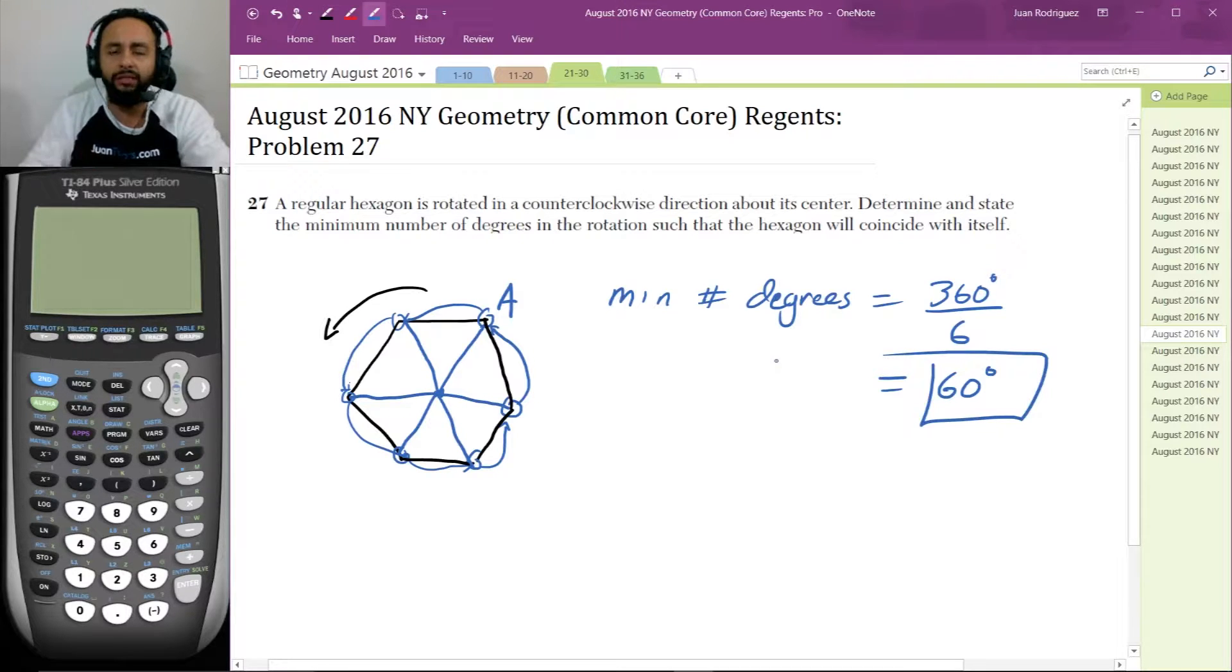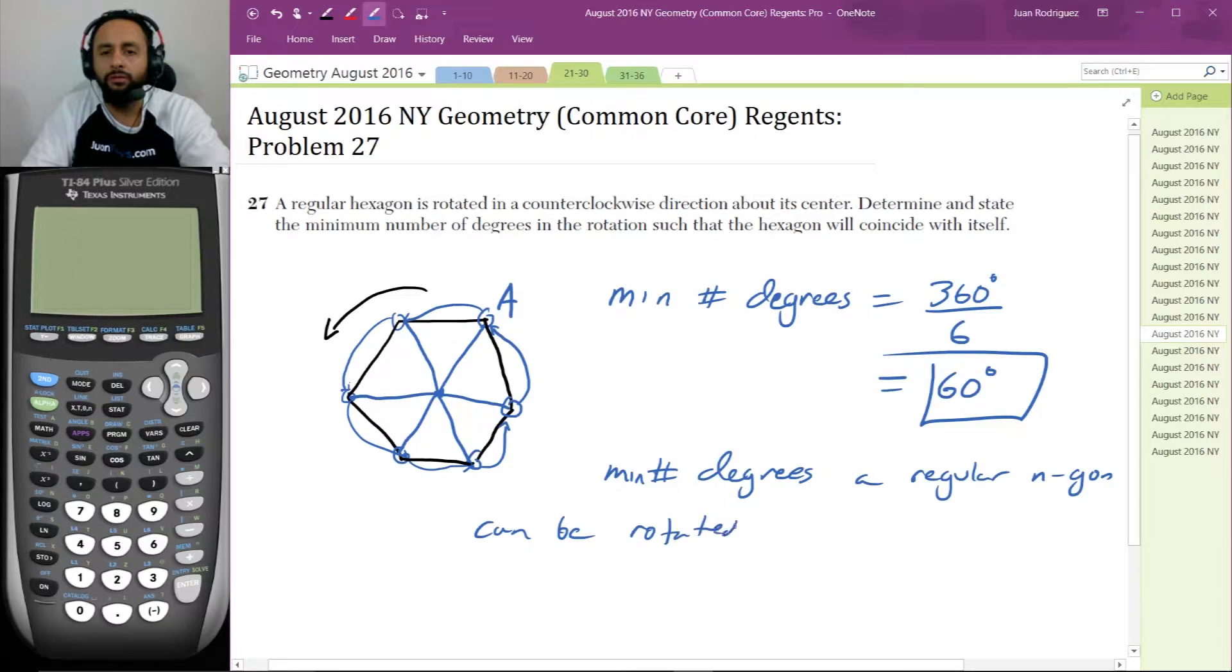If you're wondering how many degrees you can rotate a shape, an N-gon. So the minimum number of degrees a regular N-gon can be rotated so that it coincides with itself.